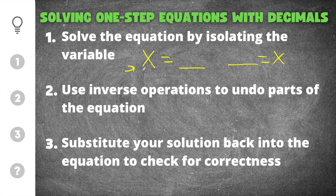In order to isolate that variable you have to use inverse operations to undo parts of the equation. So your equation is going to have addition, subtraction, multiplication, or division in it. And in order to undo those operations you're going to use the opposite or the inverse of the operation that's in your equation.